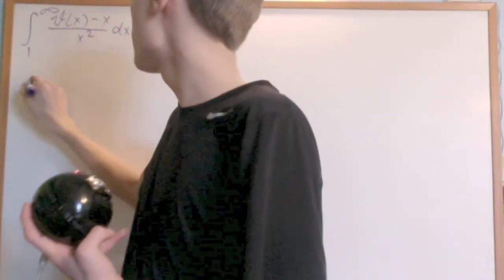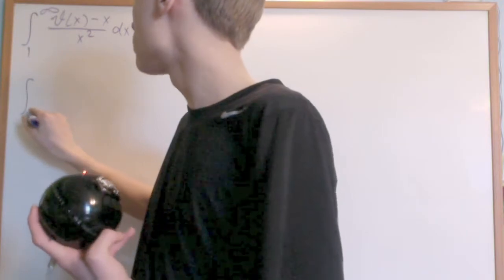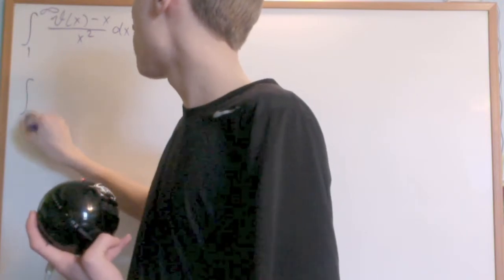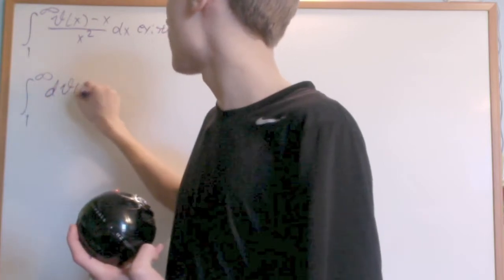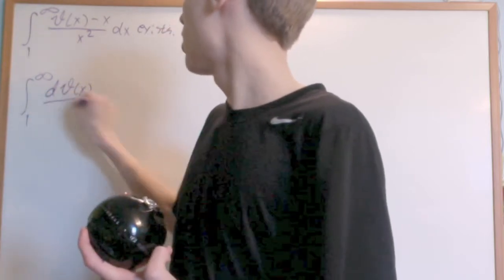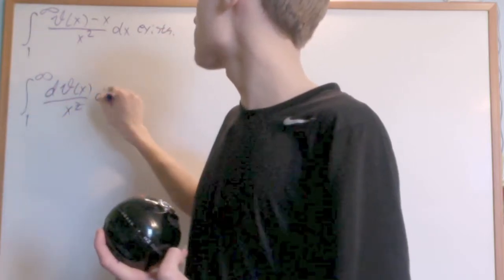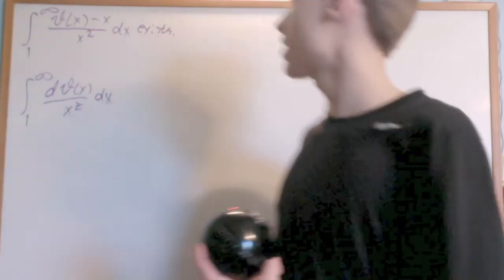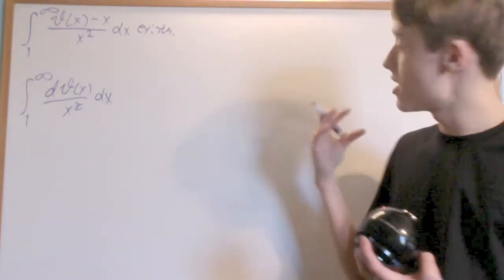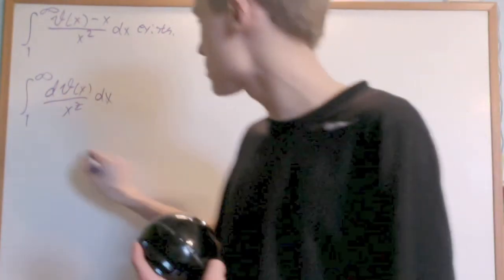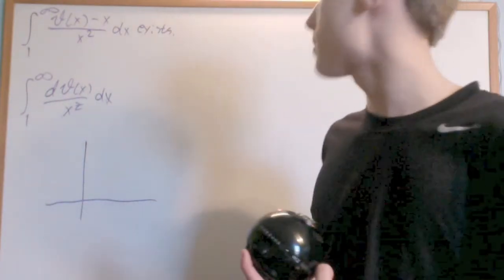Let's start off with the integral from 1 to infinity of d theta of x over x to the z. It might look like I'm going out of nowhere, but the reason I'm doing this is because d theta of x is really well behaved.